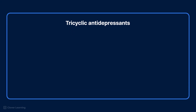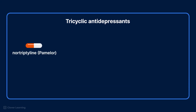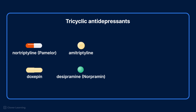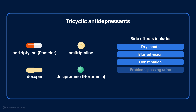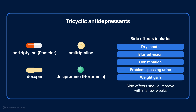Tricyclic antidepressants include nortriptyline (Pamelor), amitriptyline, doxepin, and desipramine (Norpramin). Side effects include dry mouth, blurred vision, constipation, problems passing urine, and weight gain, among others. Side effects should improve within a few weeks.